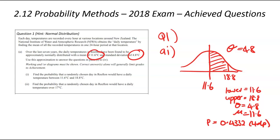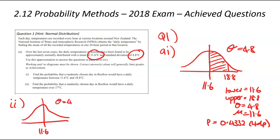We're now going to look at part II — a similar question, finding the probability. As soon as you see a probability reference, you're going to need a normal distribution curve to draw on. Put in your mean — unchanged at 11.6 — and standard deviation, still 4.8. We've been told about 17 degrees or over, so we put in a line representing 17 and we're finding the over part. This time around there's no upper limit — it goes on forever in theory — so that's when we use 49999 as our upper limit in the calculator.